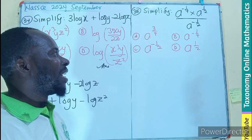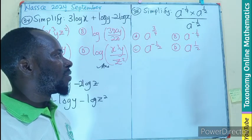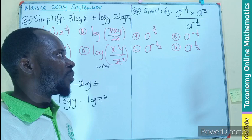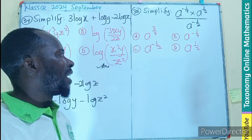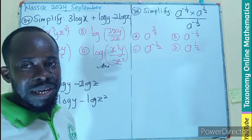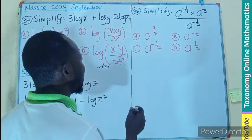Number 35, simplify a to the power negative one-quarter plus one-fourth times a exponent one-half divided by a exponent negative one-half. Merely the application of the laws of indices. So let's see.